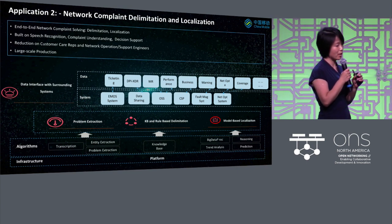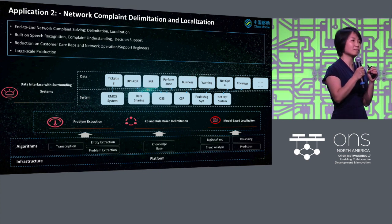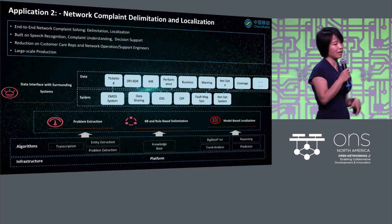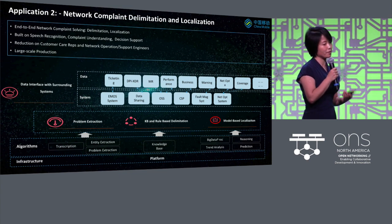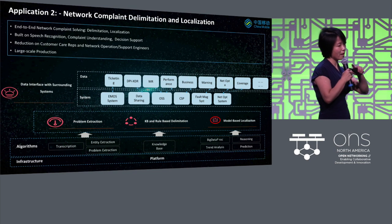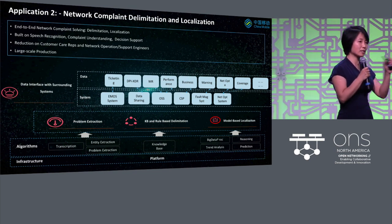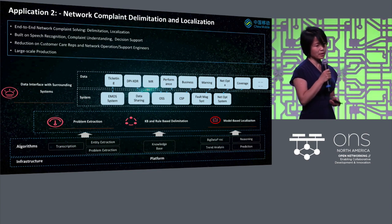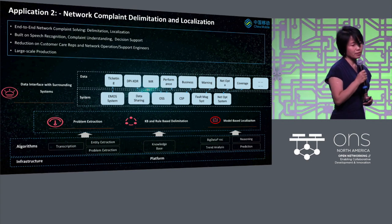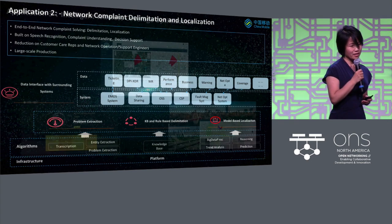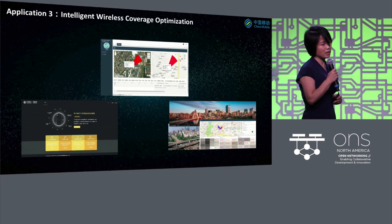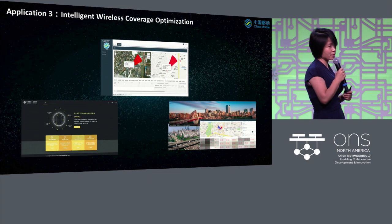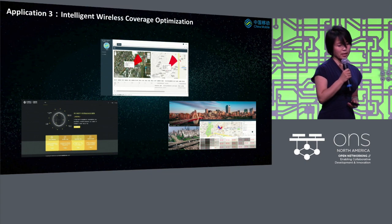Basically, we build and maintain a knowledge base and connect to all the relevant data. There is heavy engineering work to connect all the data points to make the decisions smart. This has been deployed at large scale and saved us quite a lot of money. Another example connected to wireless is intelligent coverage optimization — a back office tool used inside China Mobile.